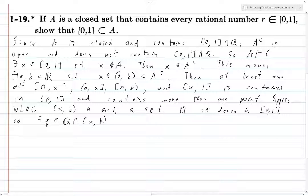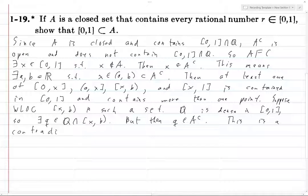But then Q is in A complement, right, because this entire interval is contained in A complement. So in particular, this Q being in here must be contained in A complement. And this is a contradiction, because A complement does not contain this set here.